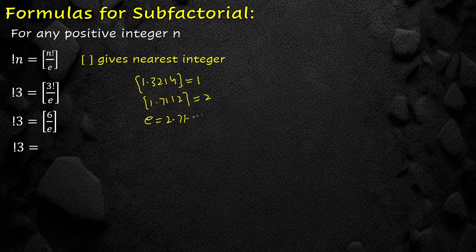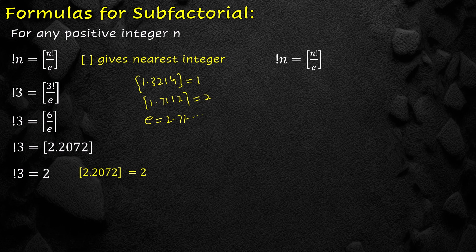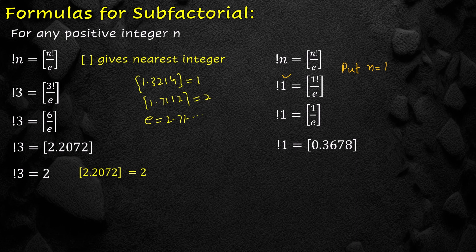Since e is approximately 2.71, after simplification we get 6/e approximately equal to 2.2022. The nearest integer of 2.2022 is 2, therefore sub-factorial of 3 is equal to 2. We also find the sub-factorial of 1 using this formula: sub-factorial of 1 equals nearest integer of 1 factorial over e, which simplifies to nearest integer of 0.3678. The nearest integer of 0.3678 is 0, therefore sub-factorial of 1 is equal to 0.